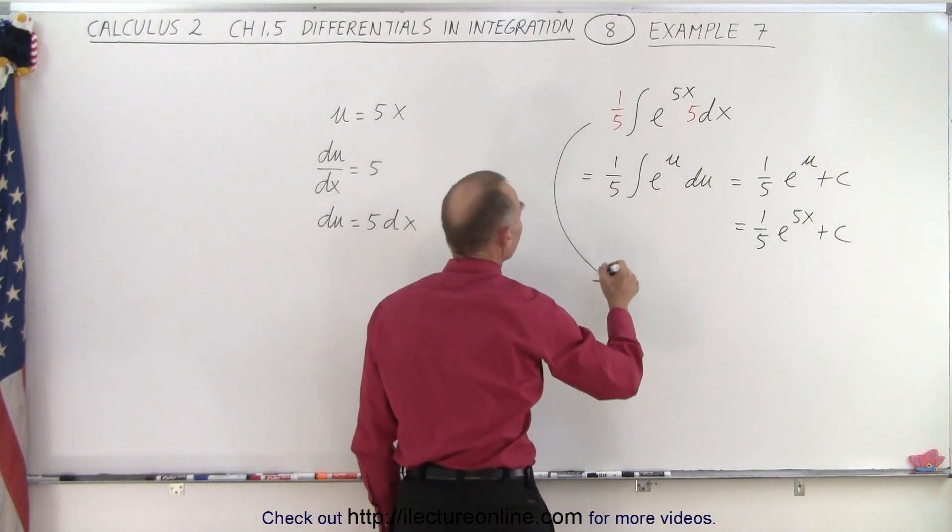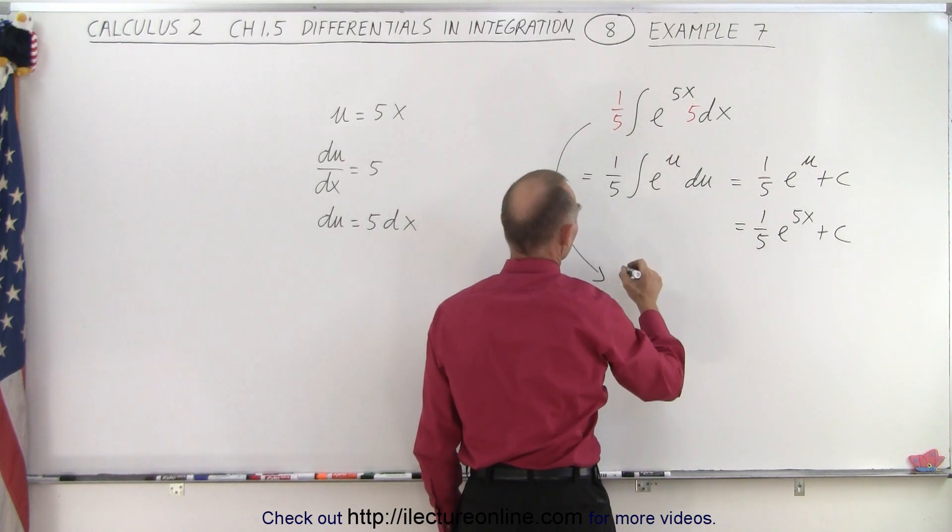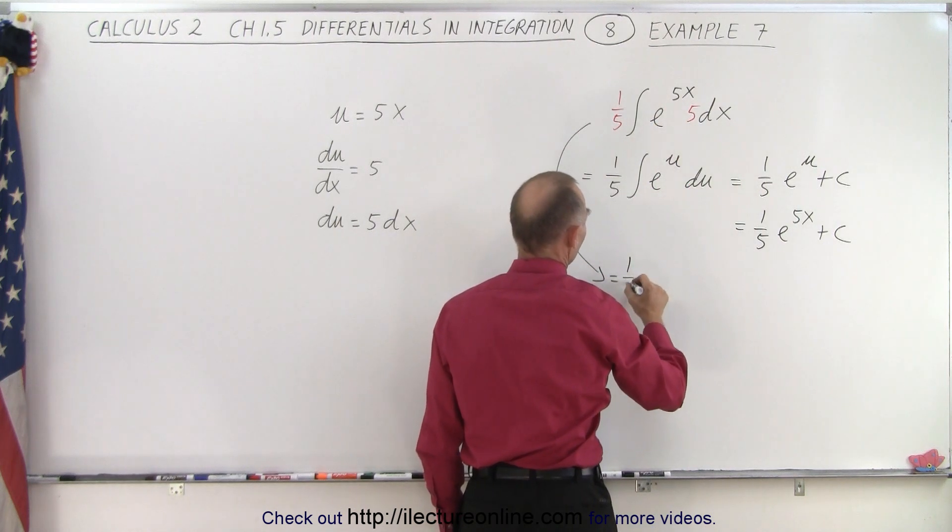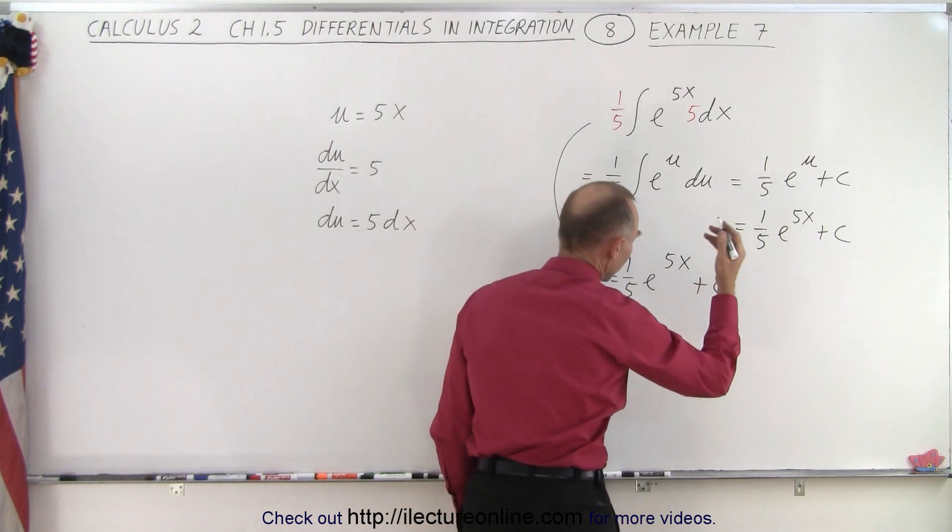Or you could simply say, once I have my 1/5 e to the u du, I could simply write this as 1/5 e to the 5x plus a constant of integration.